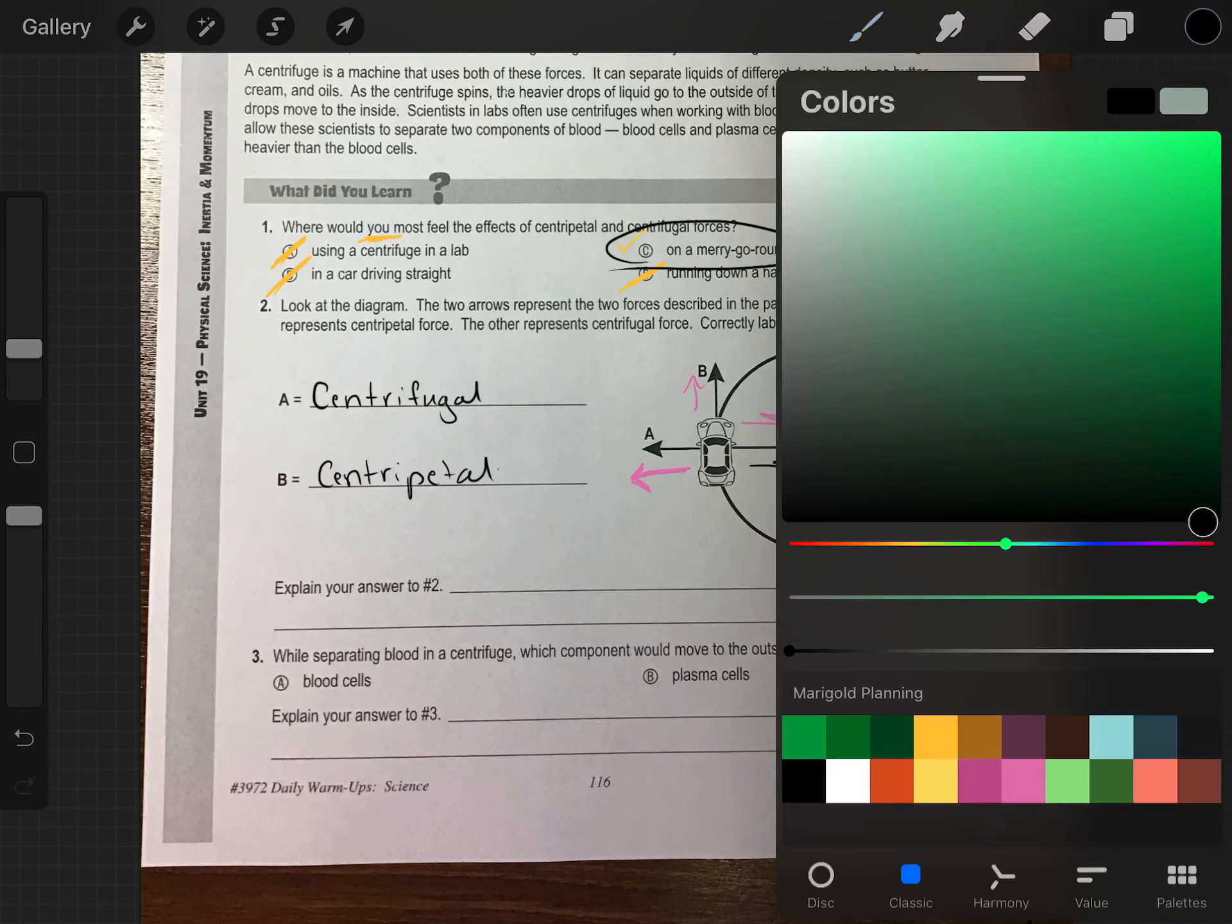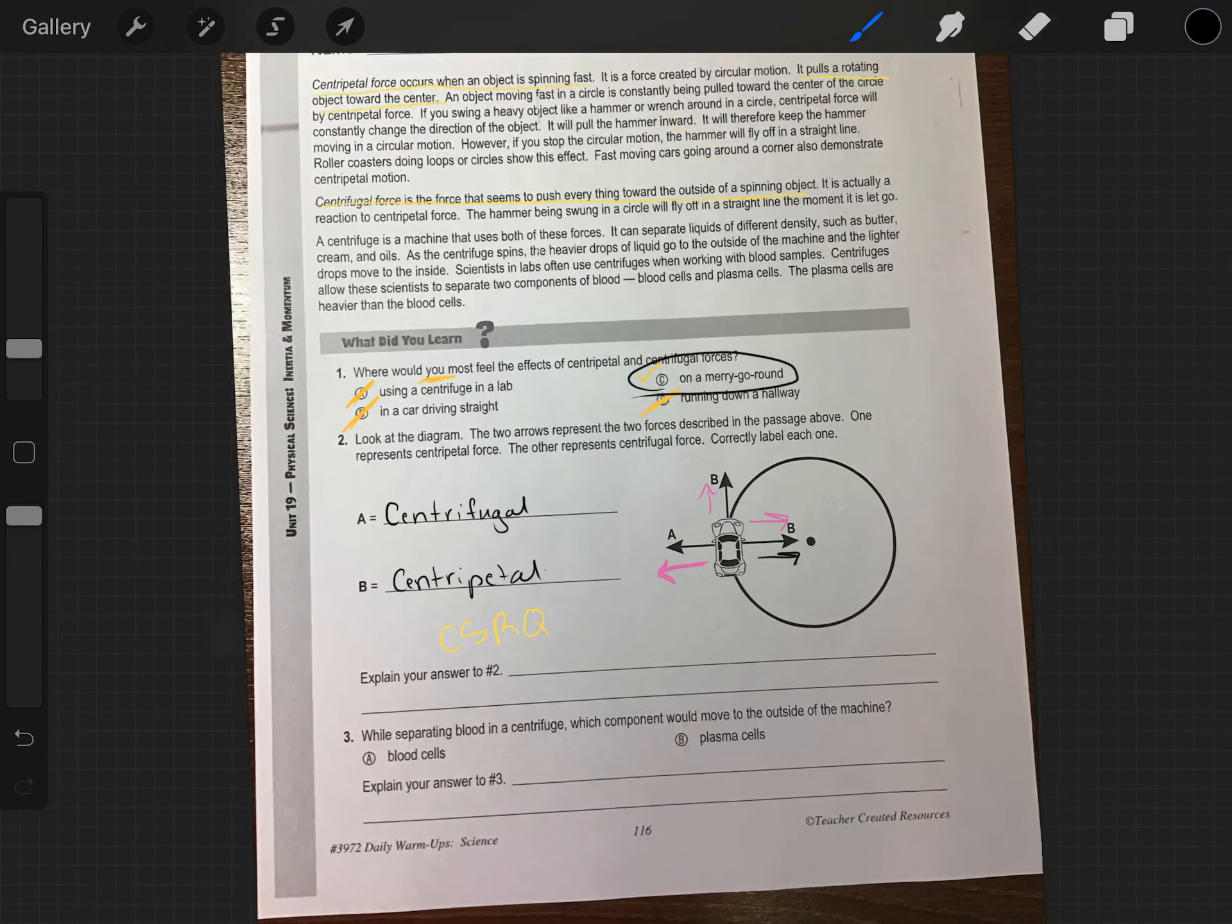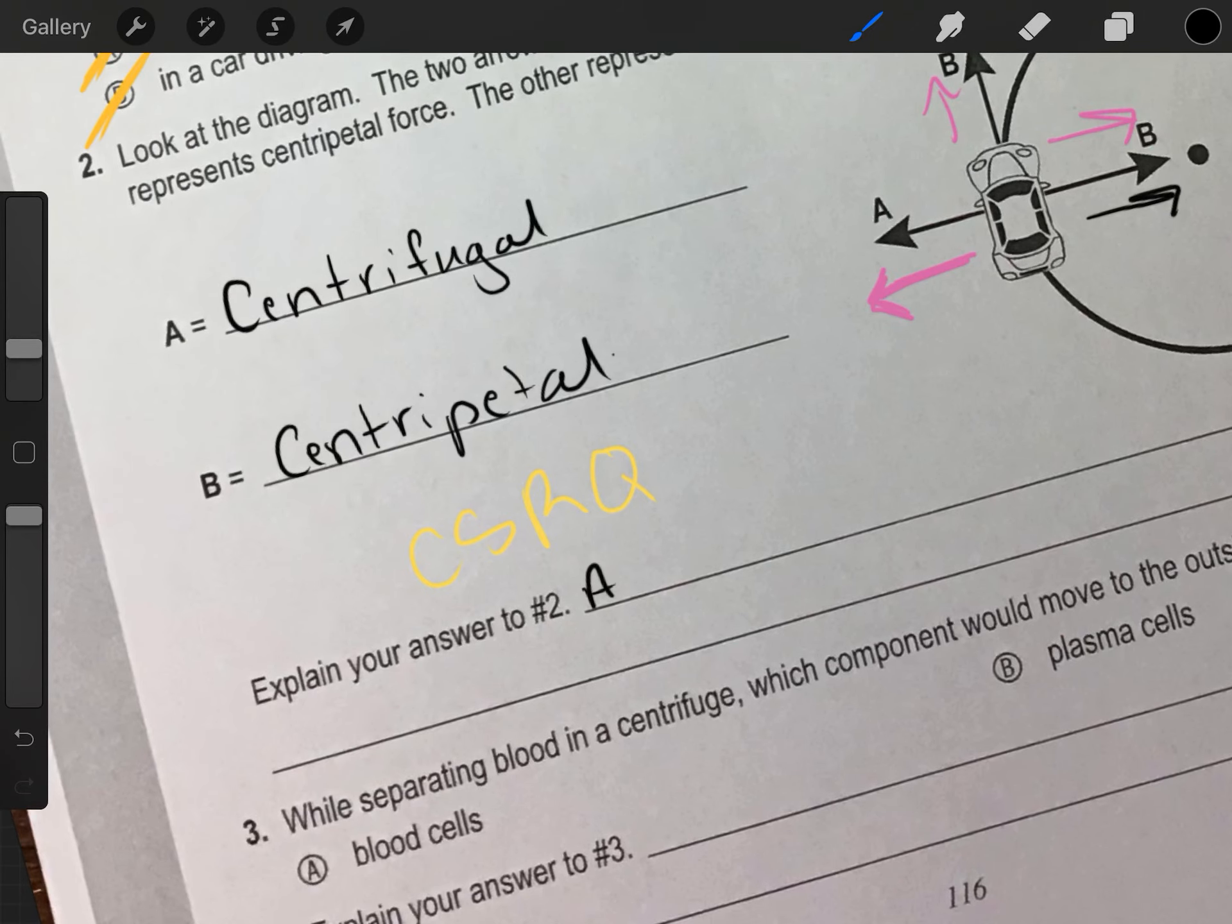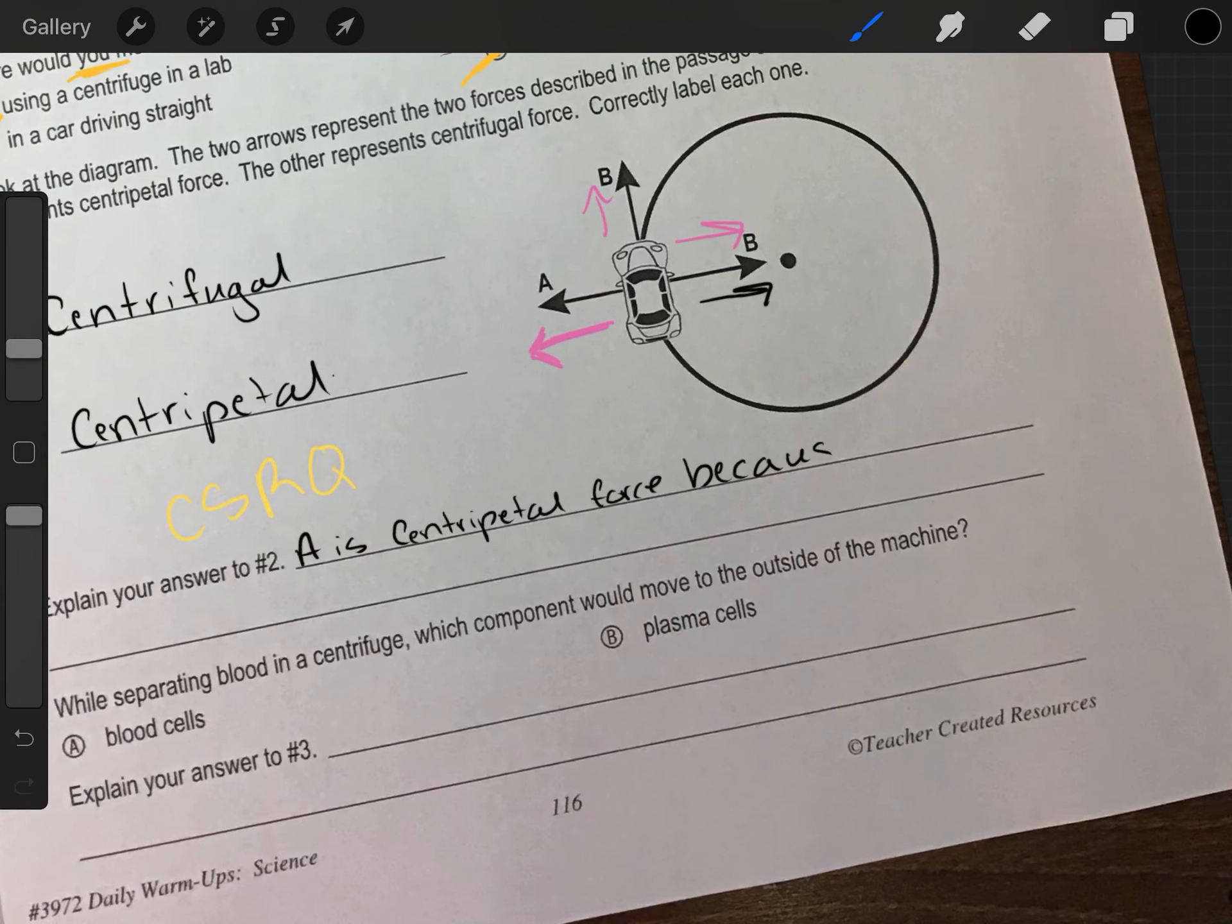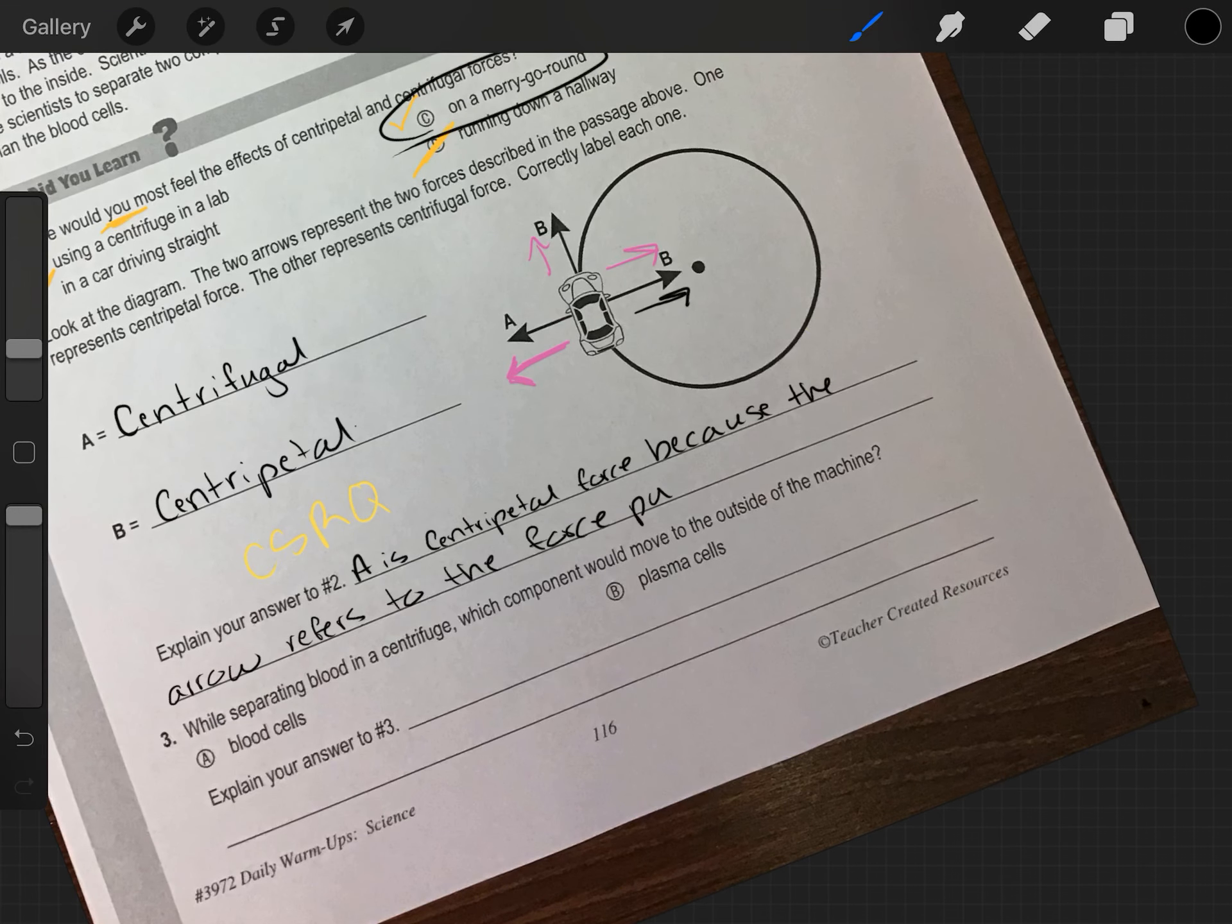Now, explain your answer to number two. Make sure you are using CSRQ, complete sentence, restate the question. We can start with A is centripetal force because the arrow refers to the force pulling the car to the outside. Now, I don't have enough room here, but then you would have another sentence. I would say B is centripetal force because the arrows refer to the force that is pulling the car towards the center.